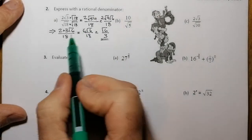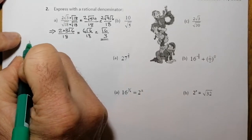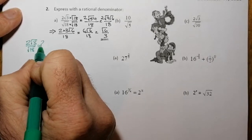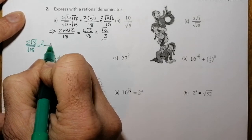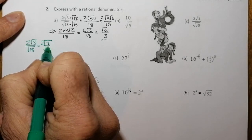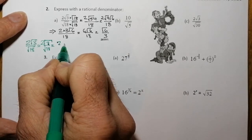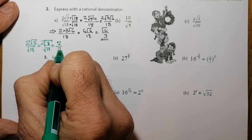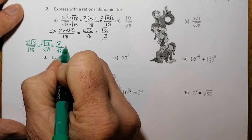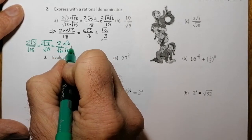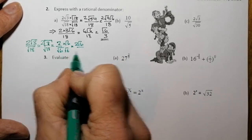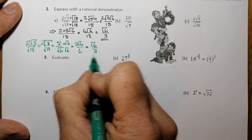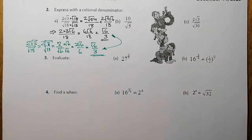Here's another way to do that same question. I can simplify inside the root first: root of 3 over 18 simplifies to root of 1 over 6, giving 2 over root 6. Then rationalising by multiplying top and bottom by root 6 gives 2 root 6 on the top, and root 6 times root 6 is 6 on the bottom. Root 36 is 6. Cancelling gives root 6 over 3 — the same answer.